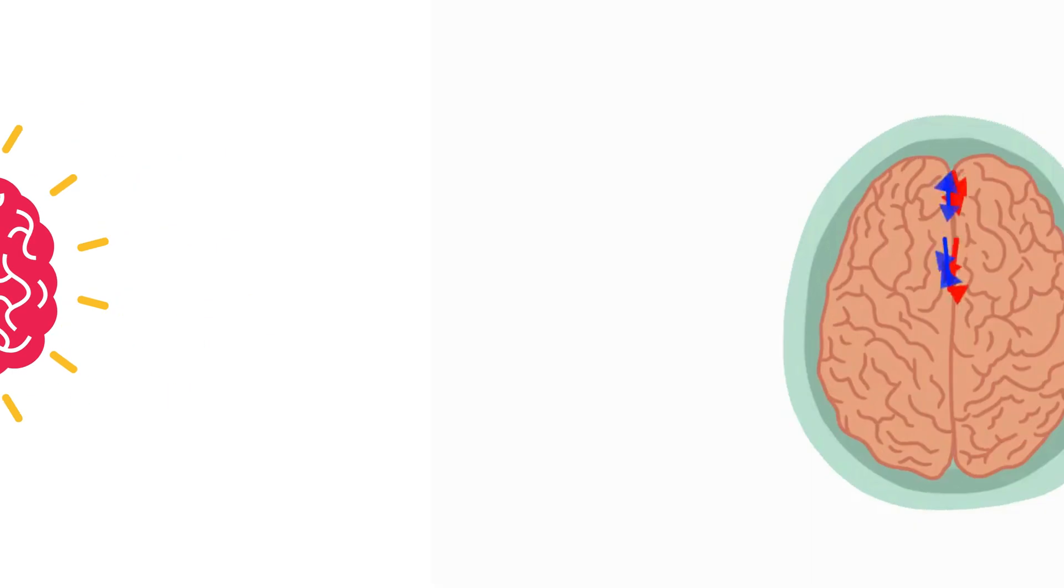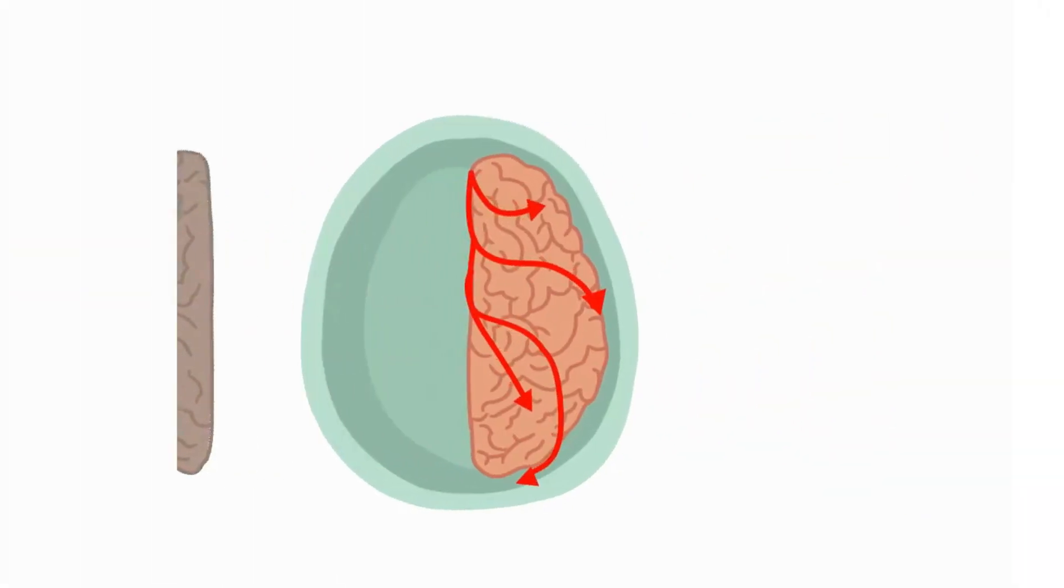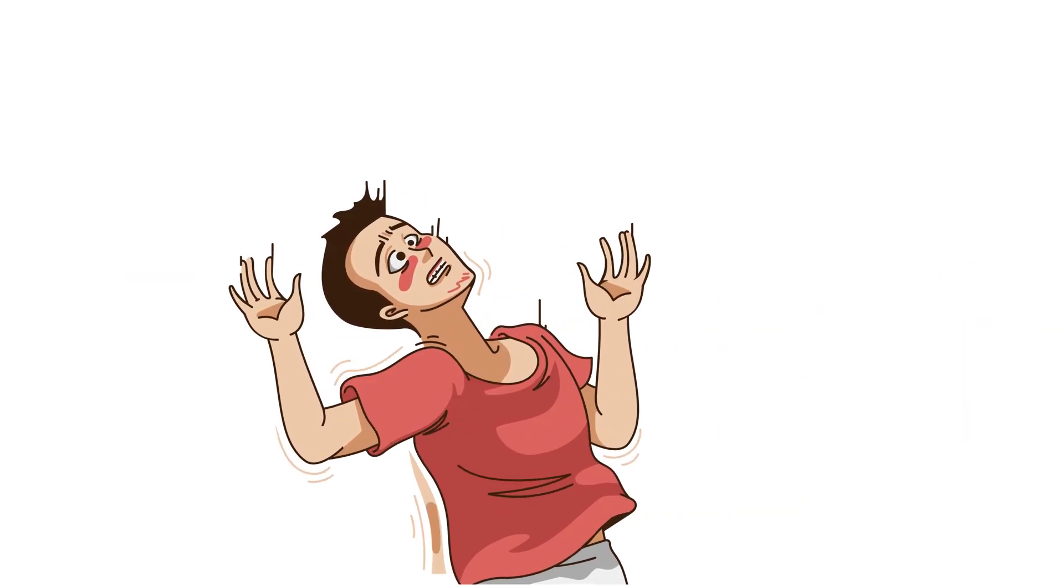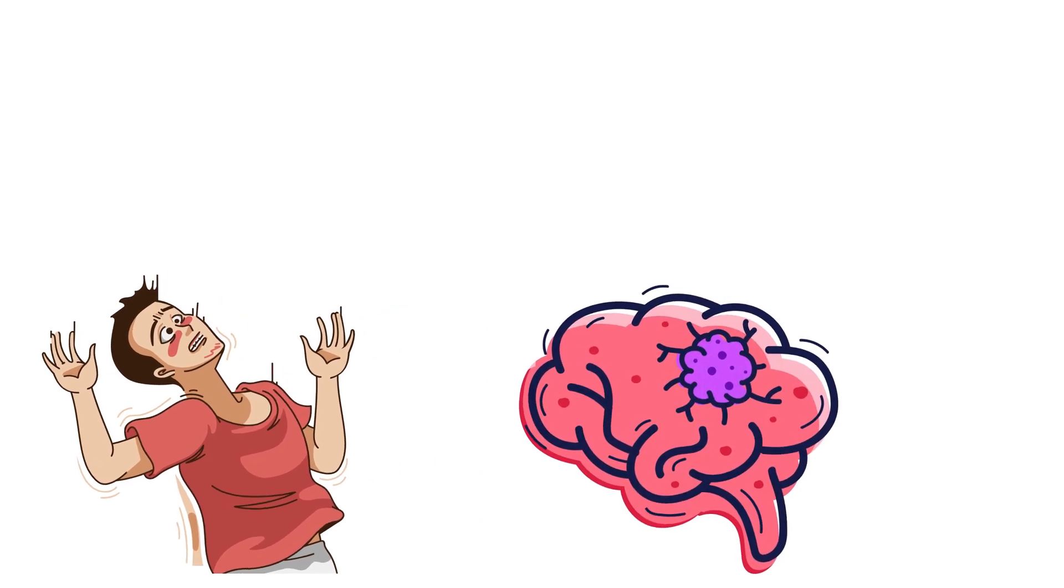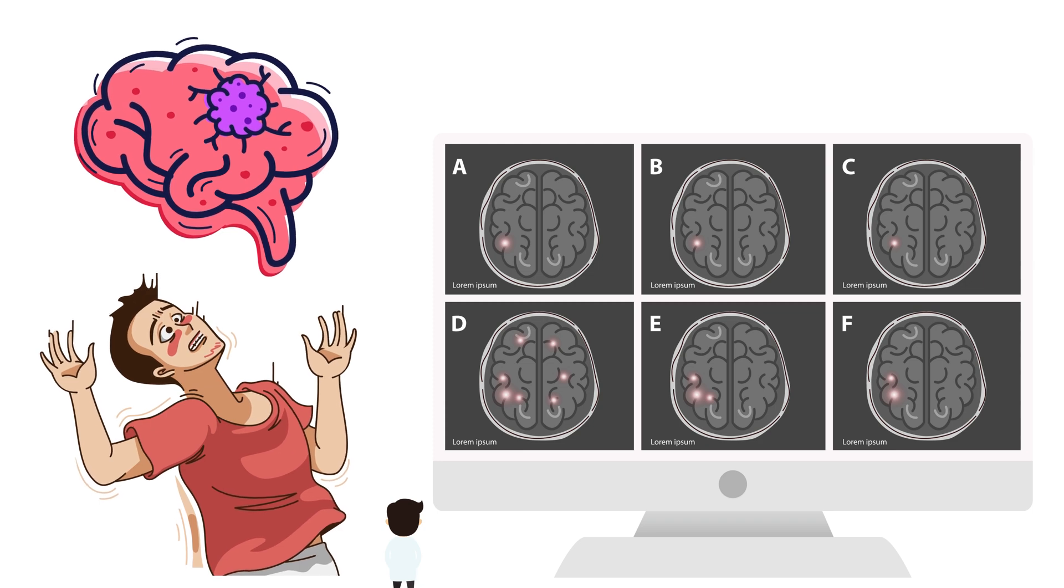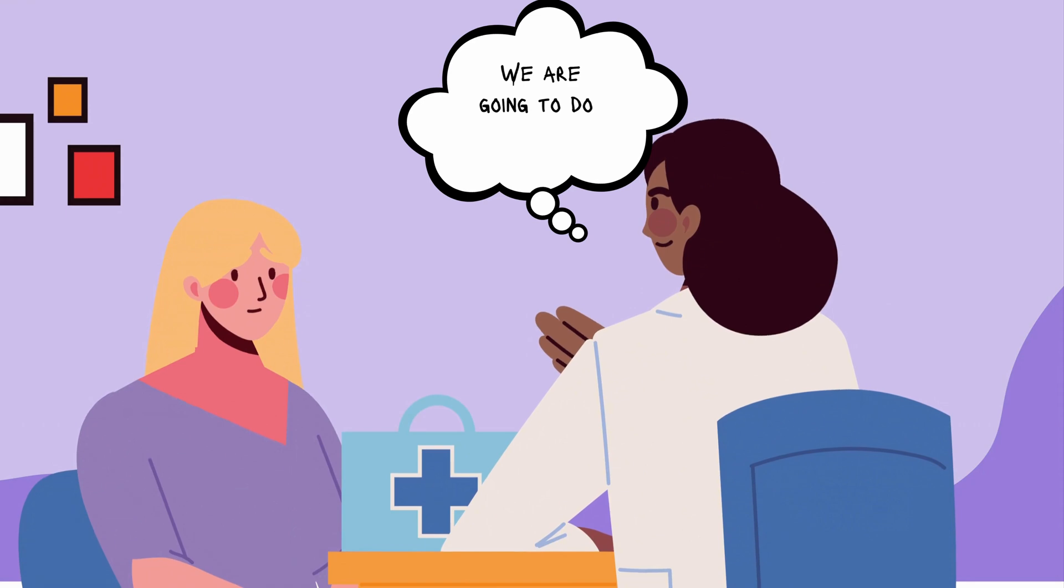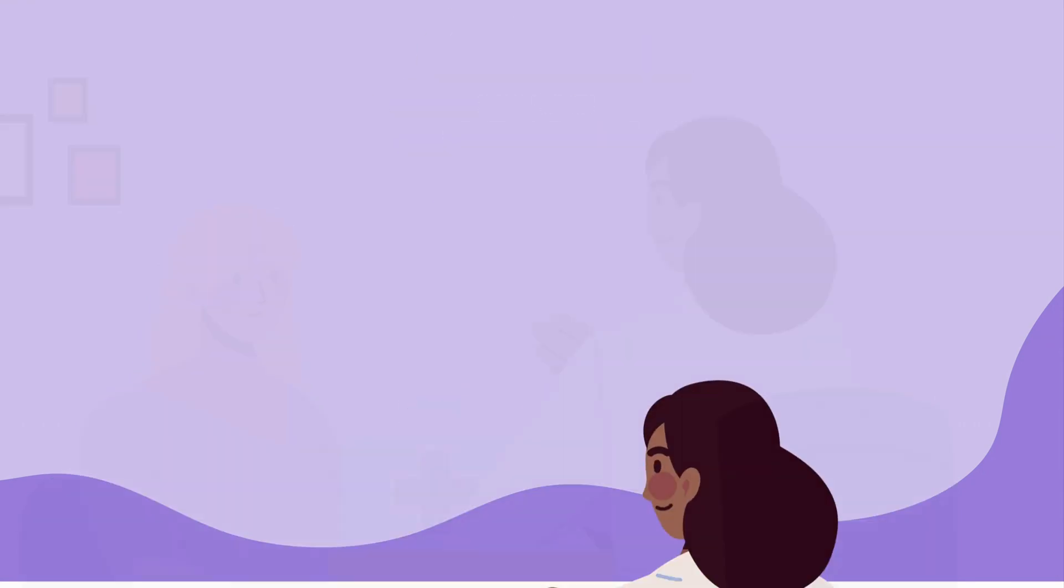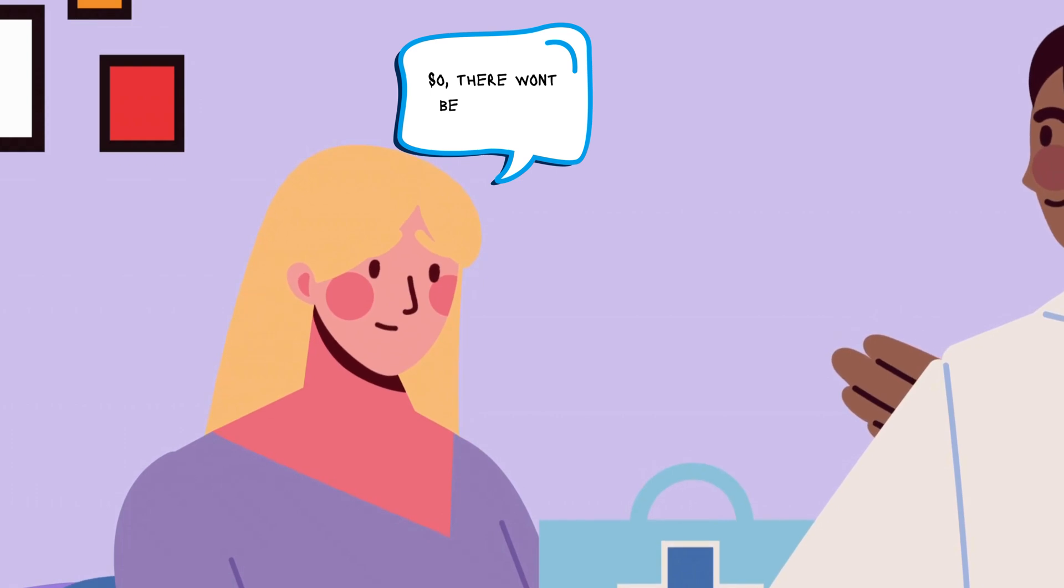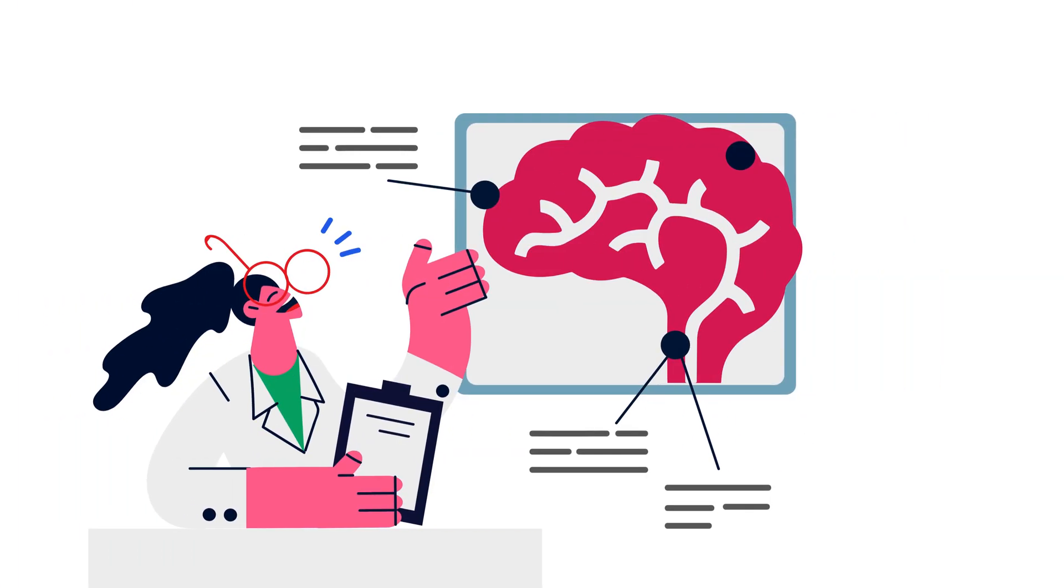Now, let's imagine a scenario where someone undergoes a radical procedure to remove half of their brain. But why would they do that? Picture this: you've got really bad epilepsy or a nasty brain tumor. I'm talking about the kind of stuff that messes with your brain big time. Well, in those cases, doctors might say, 'Hey, we've got to take out half your brain.' Sounds wild, right? But for some folks, it's the only way to stop those seizures or get rid of that pesky tumor. Crazy, huh? But sometimes, it's the best shot we've got.